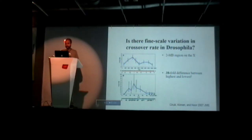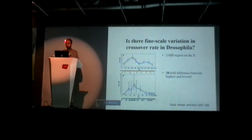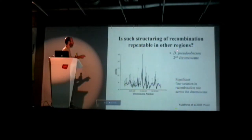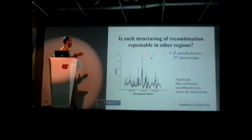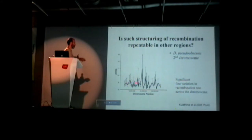But are these actually hotspots, or something like hotspots? This was just one region on the X chromosome, so we wanted to look more broadly at other regions. We looked across the second chromosome — these are positions along the second chromosome plotted against recombination rate in windows of several different megabases. Again, we see significant fine-scale variation across Drosophila. These are 95% confidence intervals, so they're very broad, but we do see quite a bit of this variation along the chromosome. We published this a couple of years ago.